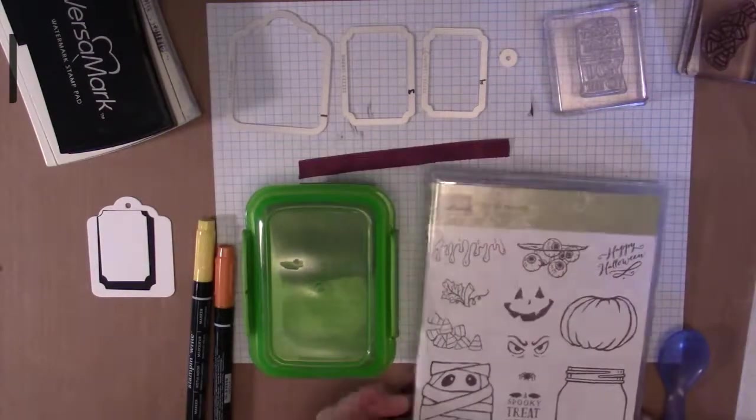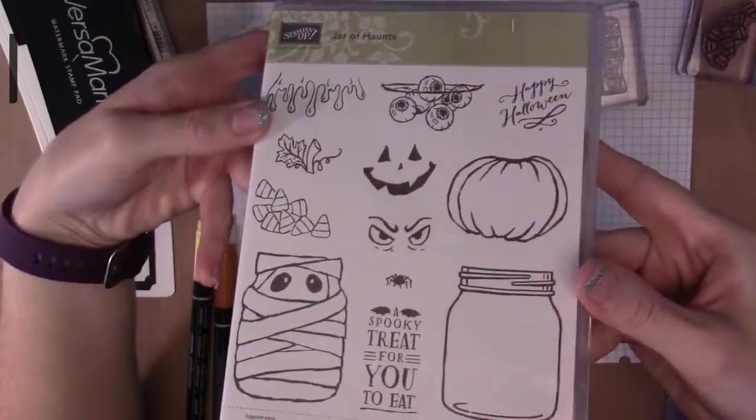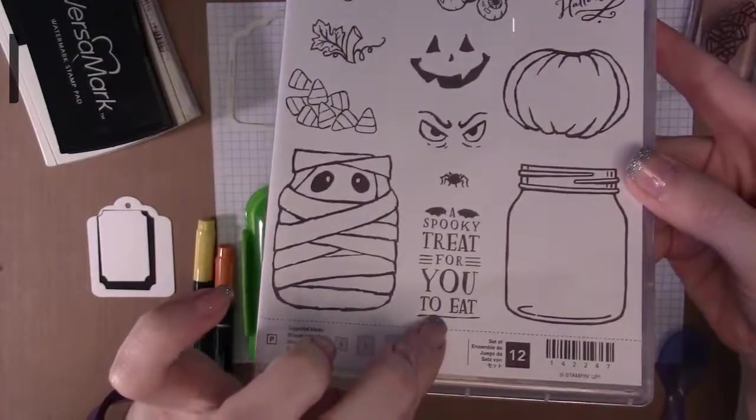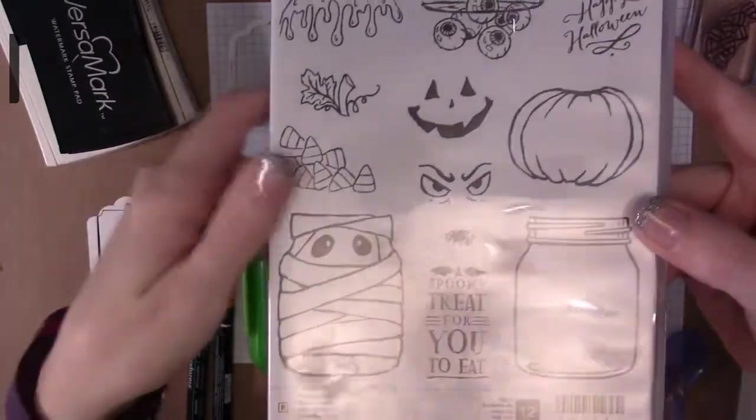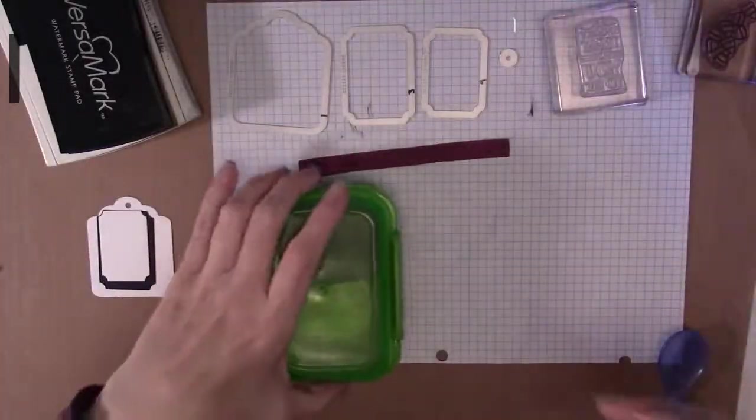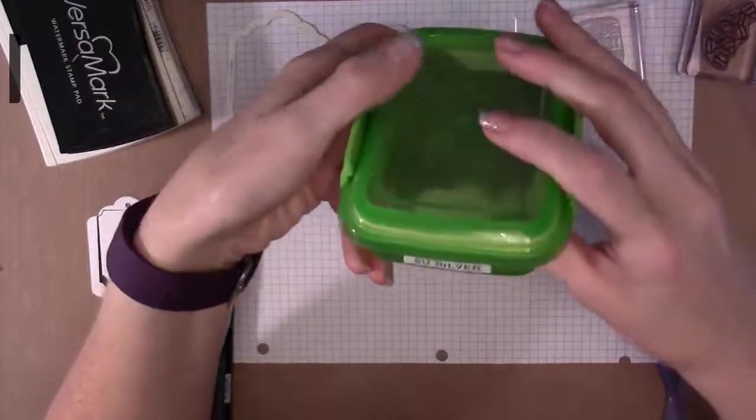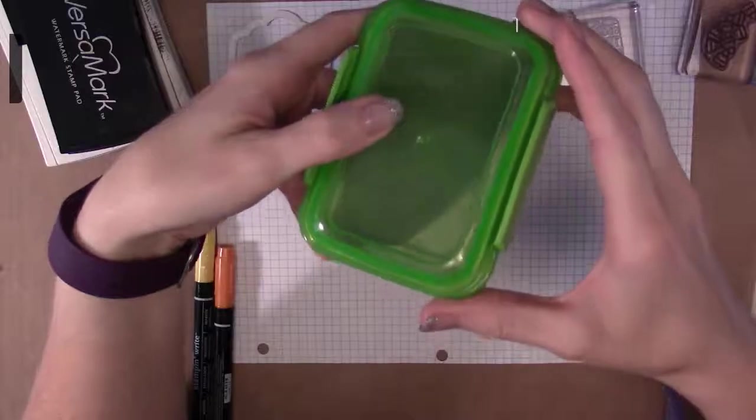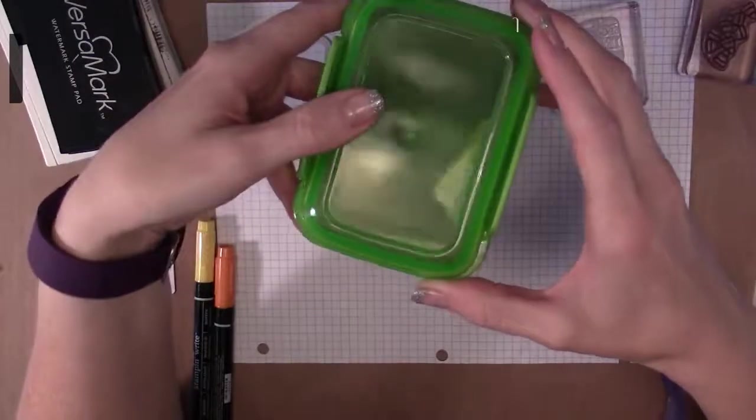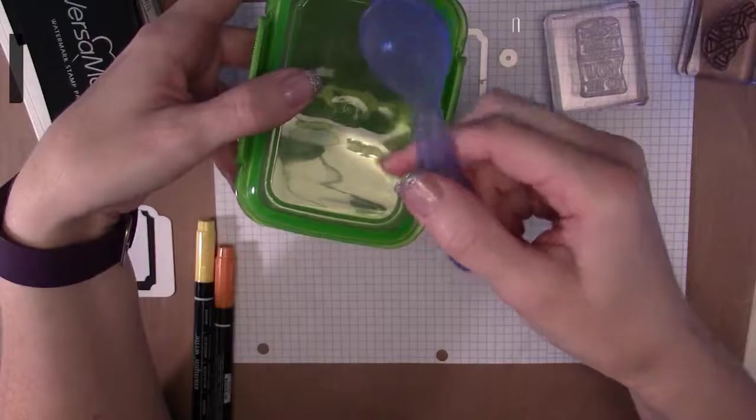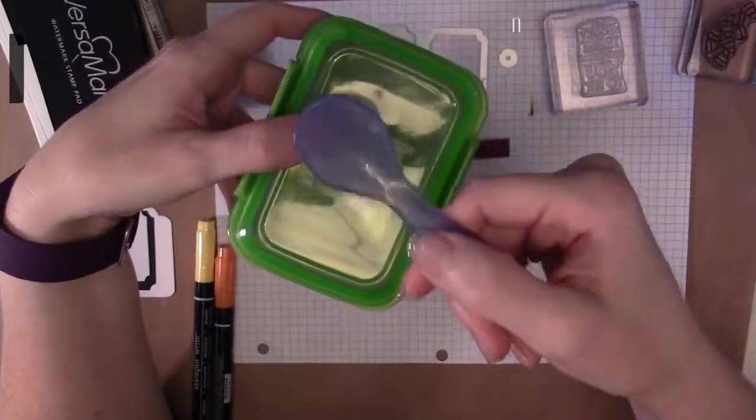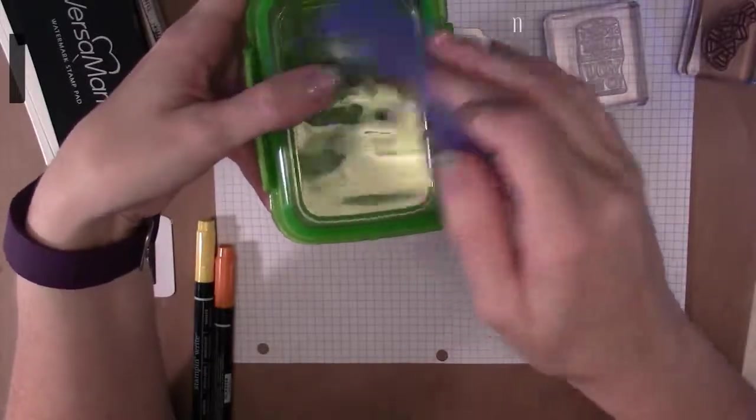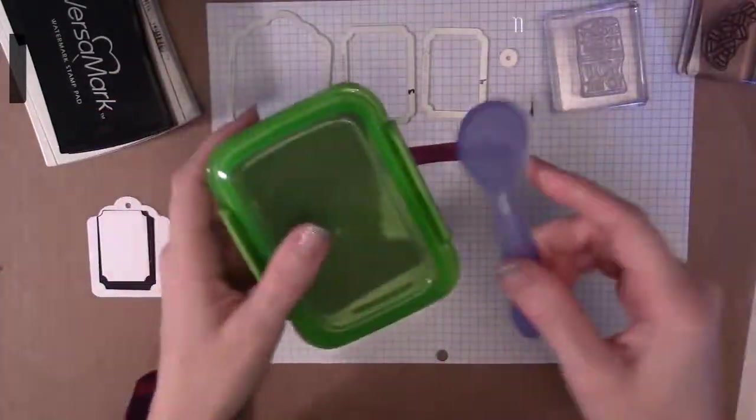We're going to be using the Jar of Haunts stamp set. We're gonna use the candy corn and the spooky treat for you to eat stamp. We're going to need our Stampin Up silver embossing powder. I got this little container from the dollar store to keep my embossing powders in and I just use like a little baby spoon. I'm probably going to get actual plastic spoons cut them down to fit inside this and have it live in there. I've been liking this system so far.